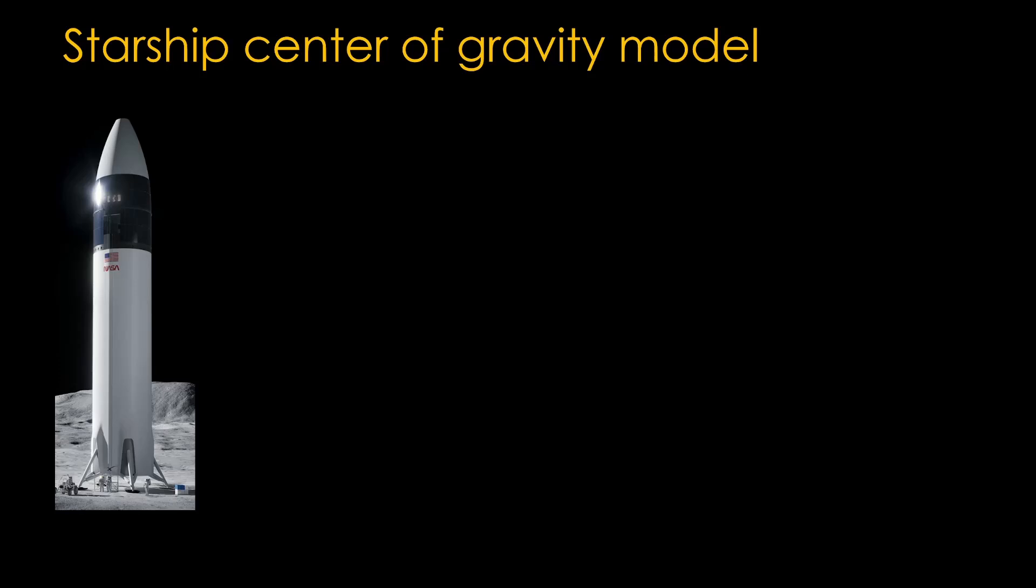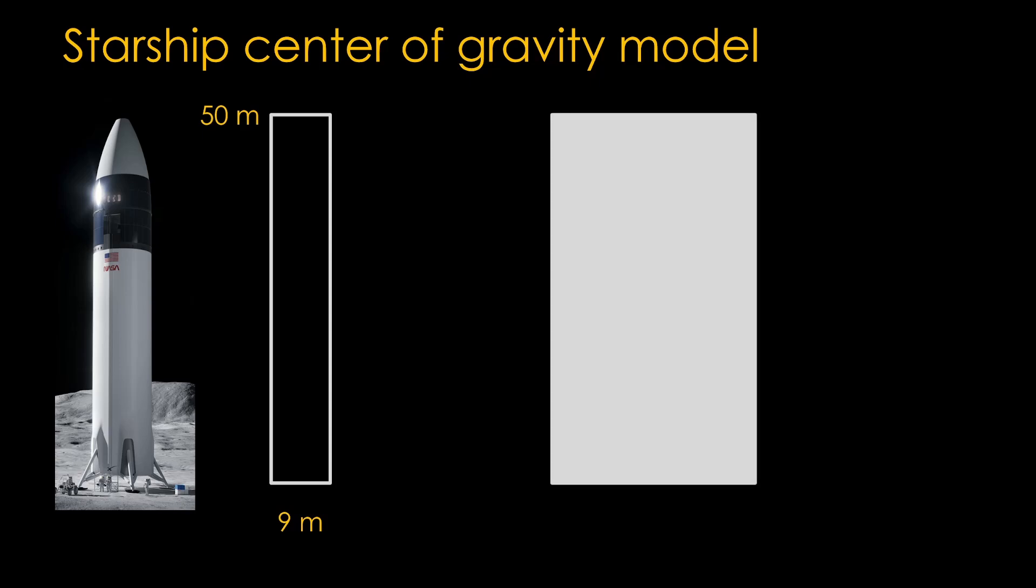Here's my simplified model. Starship is a 50 meter tall tube that is 9 meters in diameter. If we unrolled the stainless steel used to make that tube, it would be 50 meters by 28 meters for an area of 1,400 square meters. It's made out of stainless steel that is 3 millimeters thick, and that means it uses 4.2 cubic meters of material. 301 stainless steel has a mass of 7,880 kilograms per cubic meter, and therefore the total mass is 33,000 kilograms, or 33 tons. The center of gravity is right in the middle of the tube.